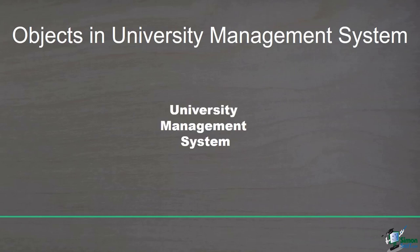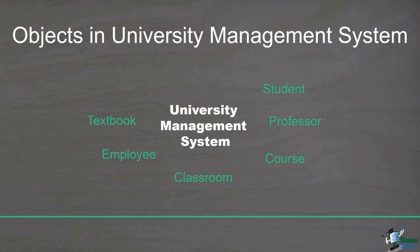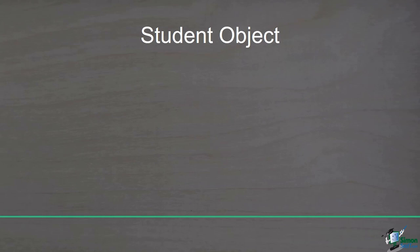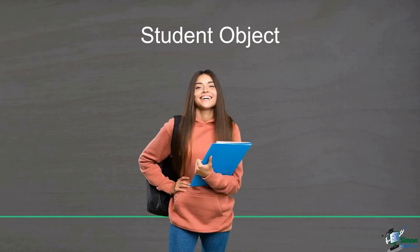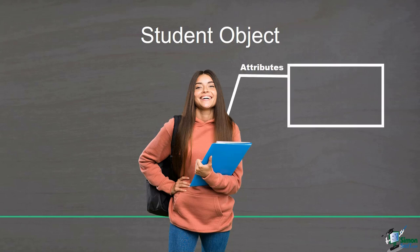In such a system you can see lots of concepts including students, professors, courses, classrooms, employees, textbooks, and exams. Each of these can be considered as an object, and each object has two parts: attributes and behavior. Think about a student as an object — what are the attributes for one student? Each student has a name, student number or ID, age, the courses they have passed, and many other attributes.